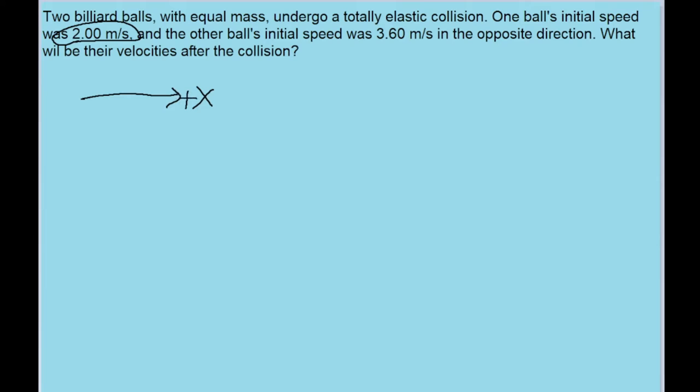That's how I'm going to define the axis, which means that the other ball's speed has a negative velocity, a speed in the negative direction, because it's in the opposite direction.